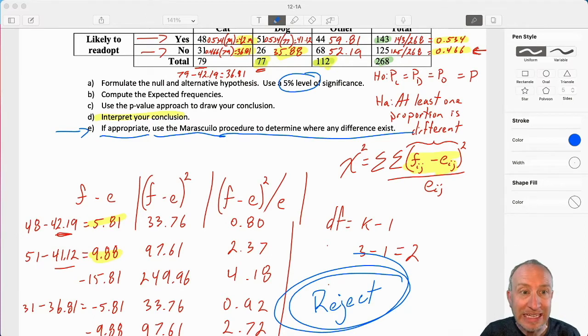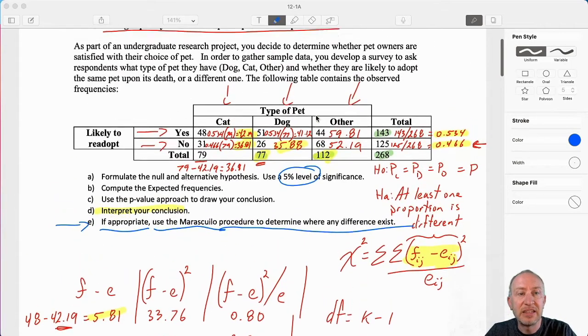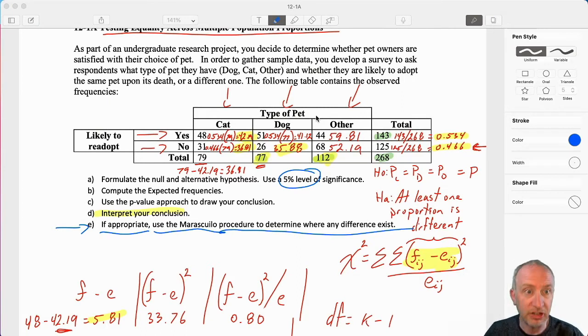Okay everybody, welcome back. We're going to pick up right where we left off from the previous video where we had gone through this test on equalities of proportions, comparing different pet owners and the likelihood that they would re-adopt the same type of pet, comparing those who have a cat, those who have a dog, those who have some other kind of pet. We found that there is a difference. At least one type of pet owner, the proportion is different. The likelihood to re-adopt is different for at least one of these types of pet owners.